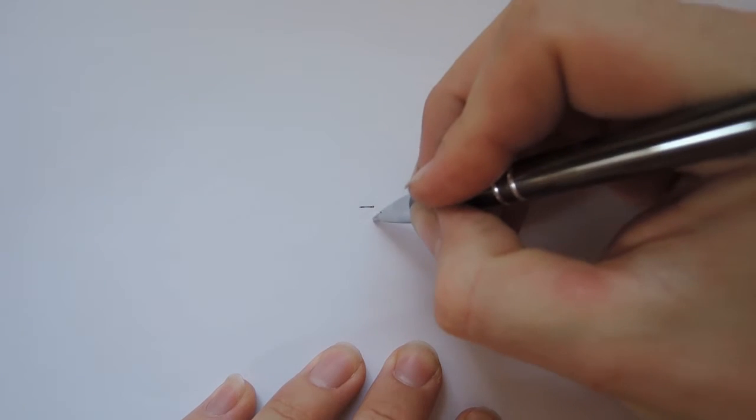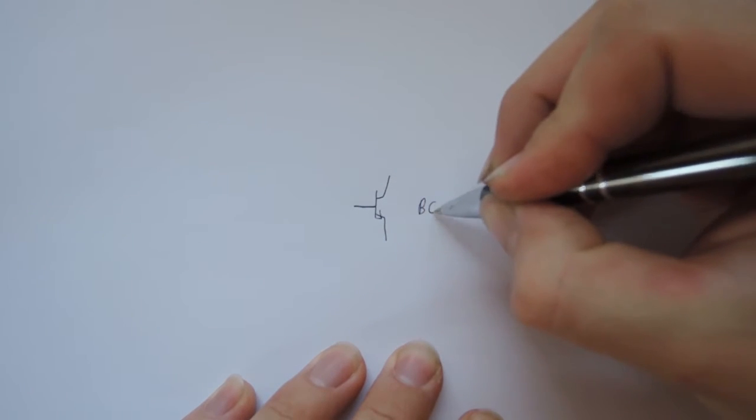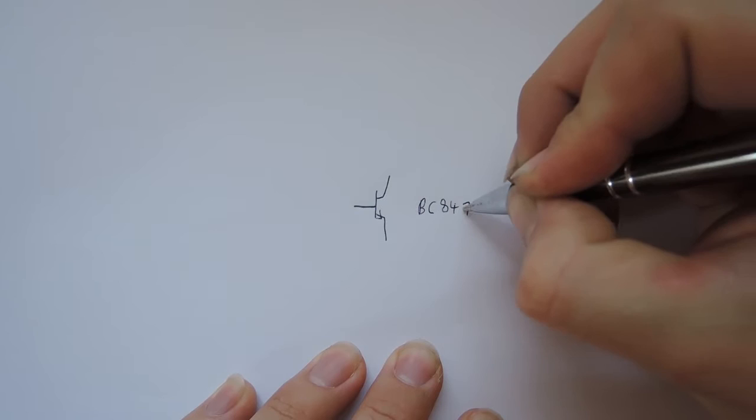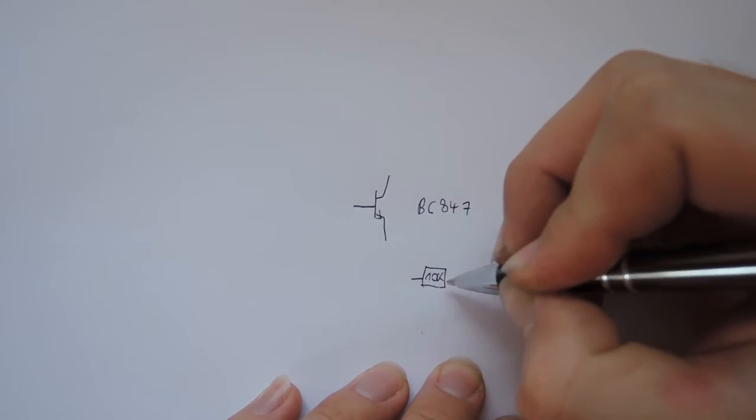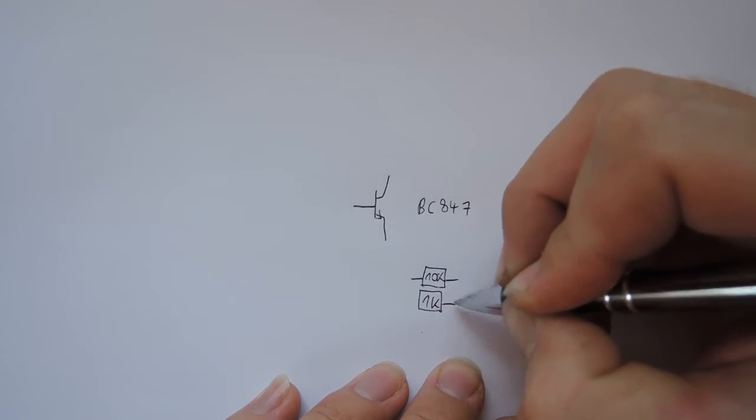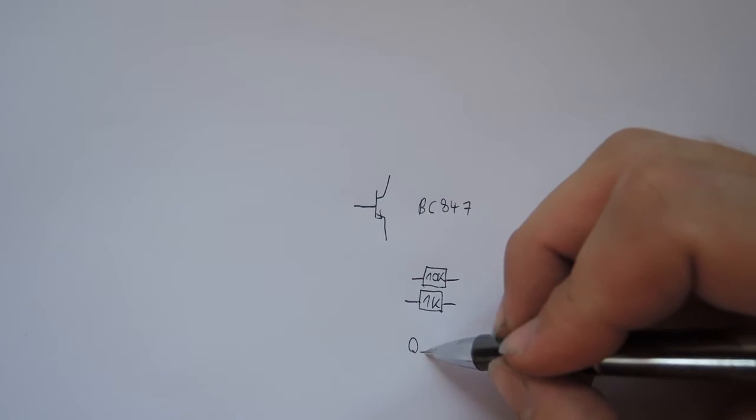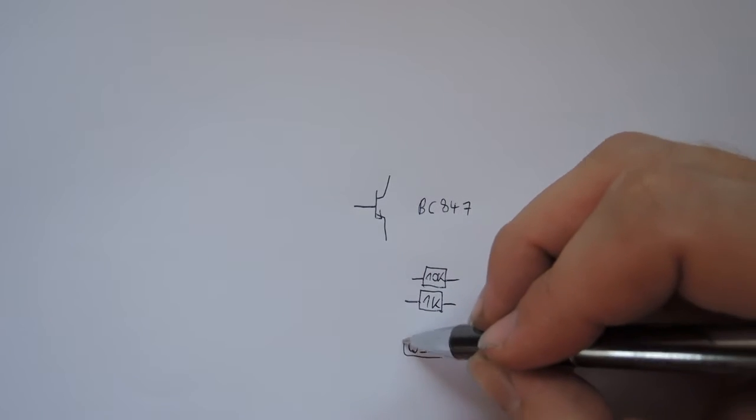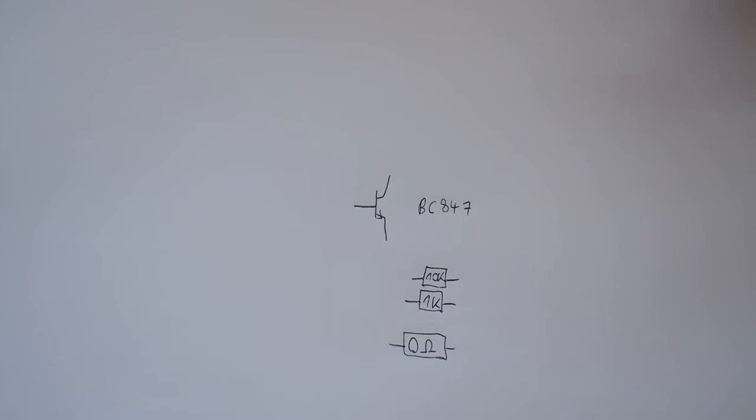Hello guys, today I want to show you my circuits. First of all, I always use transistors - that's my transistor - and 10k and 1k resistors and some zero ohm things, some bridges.